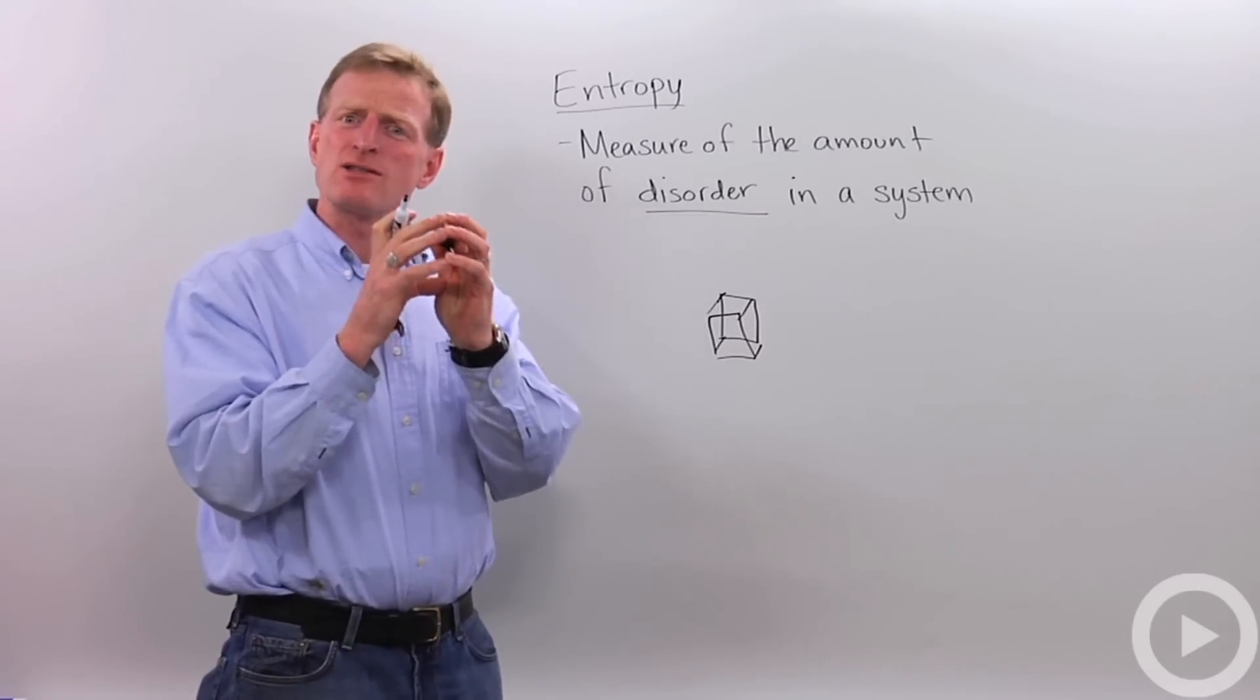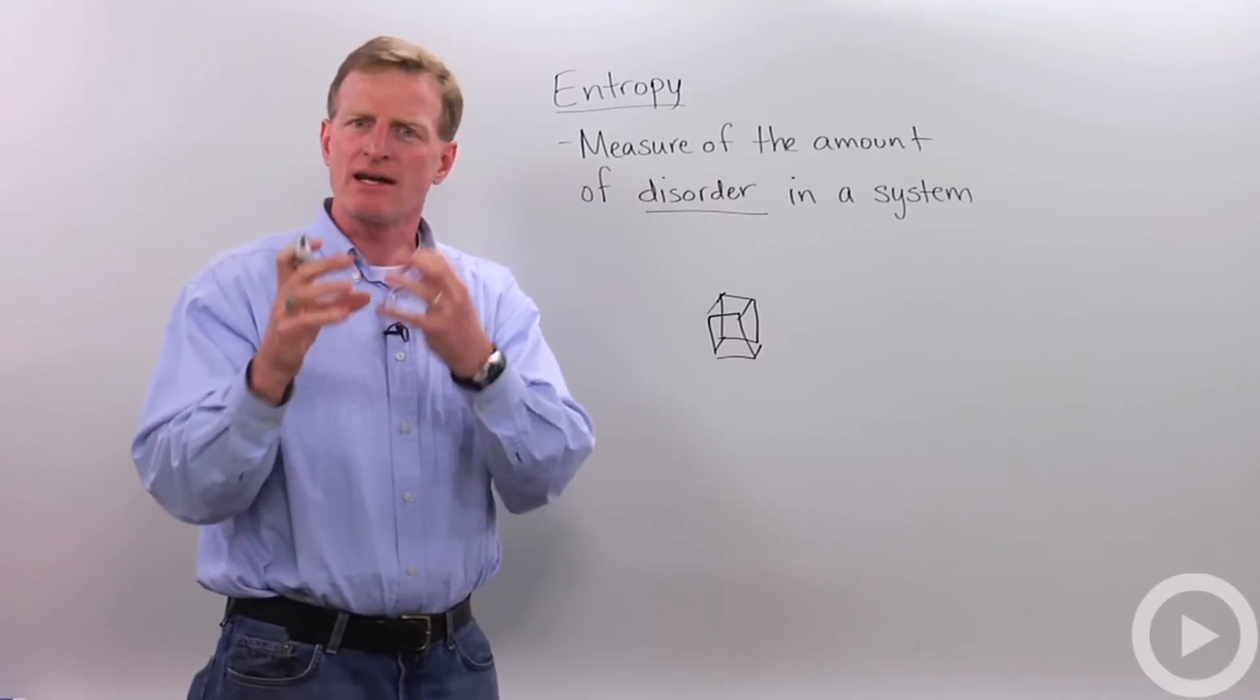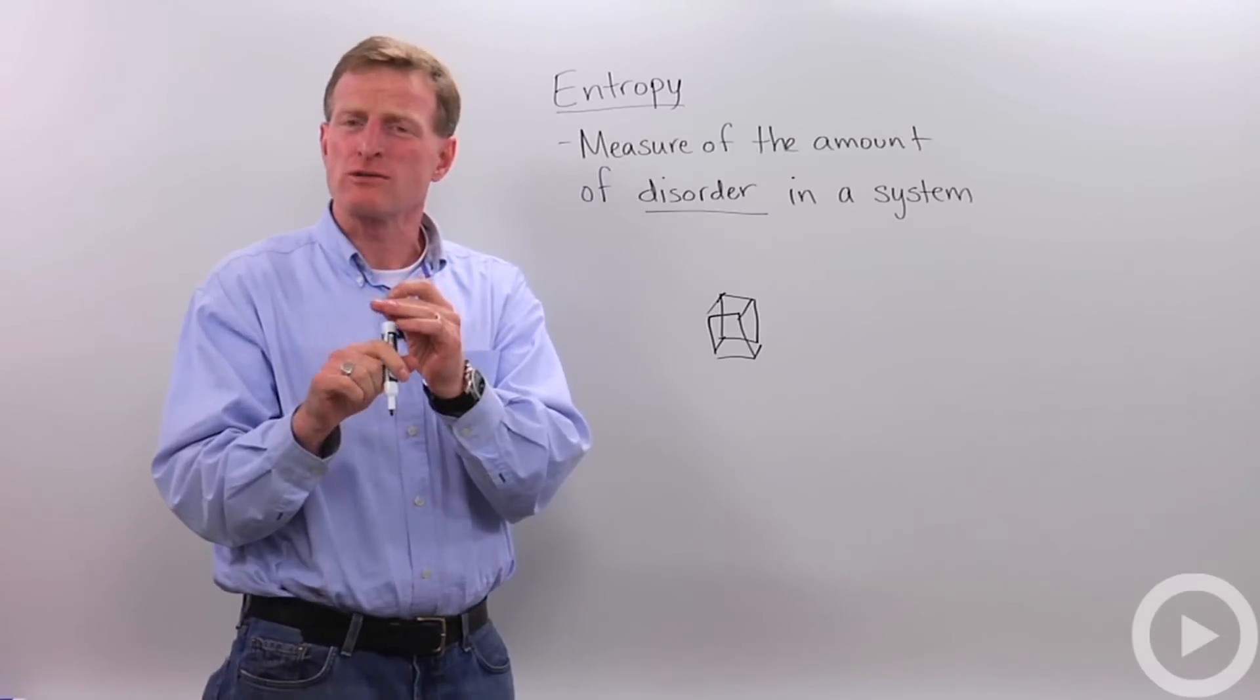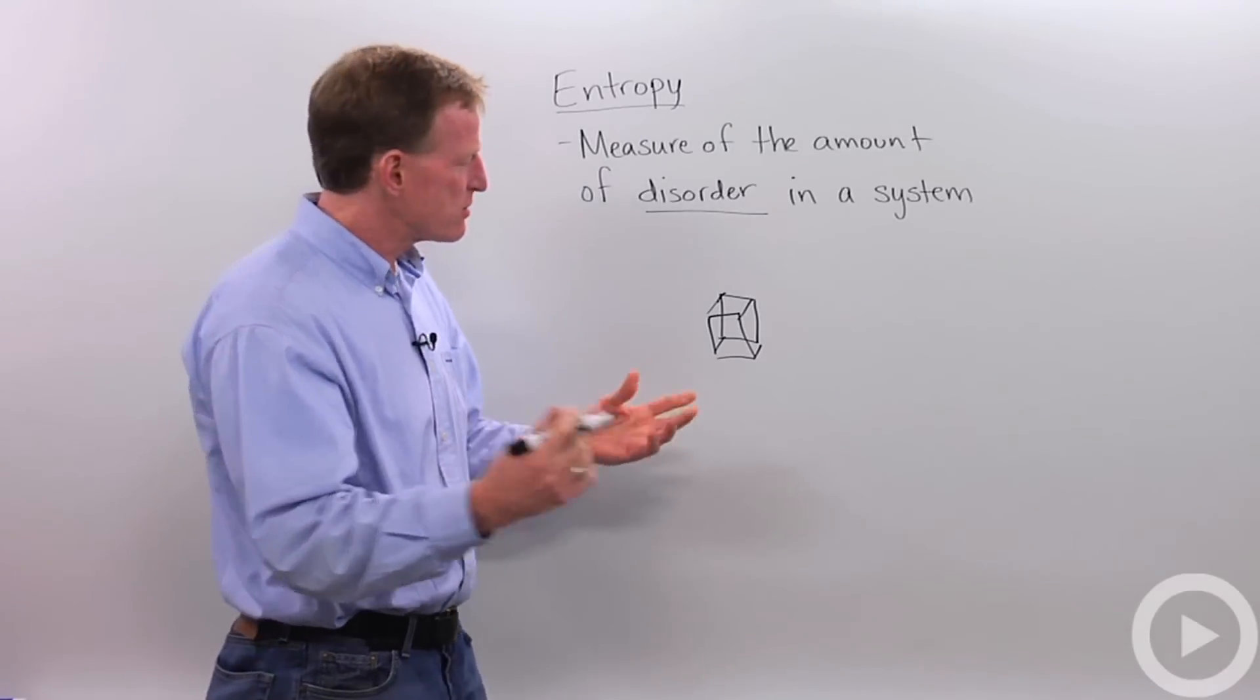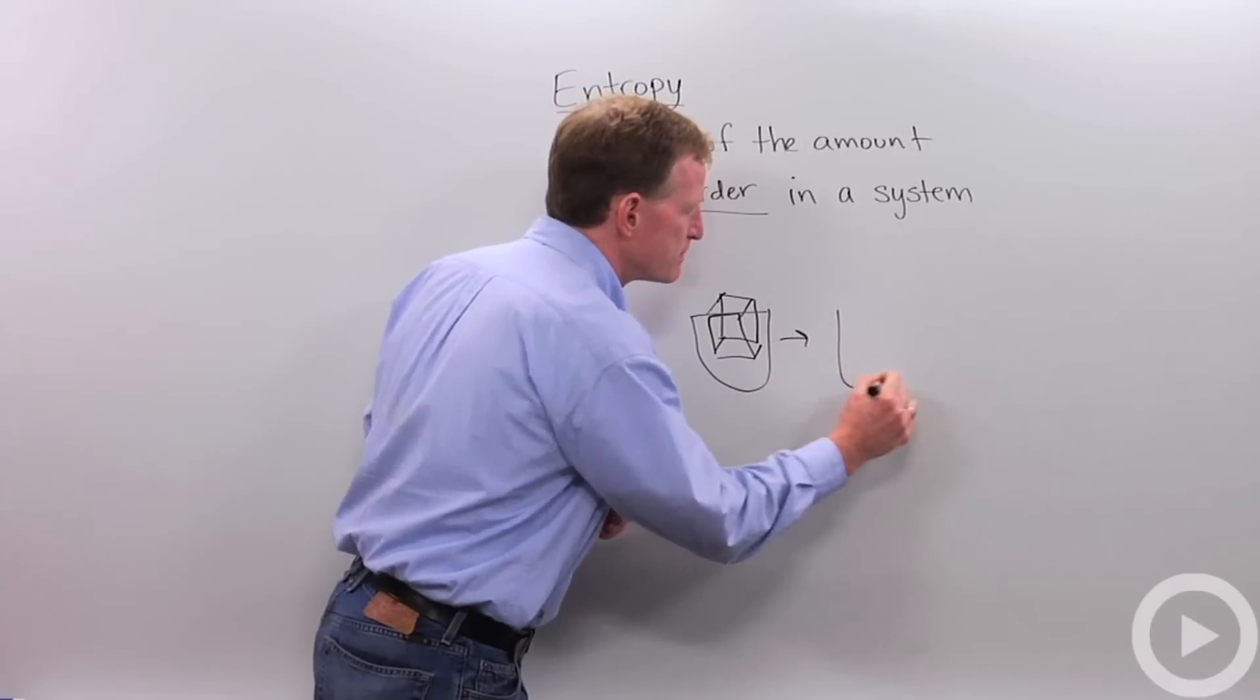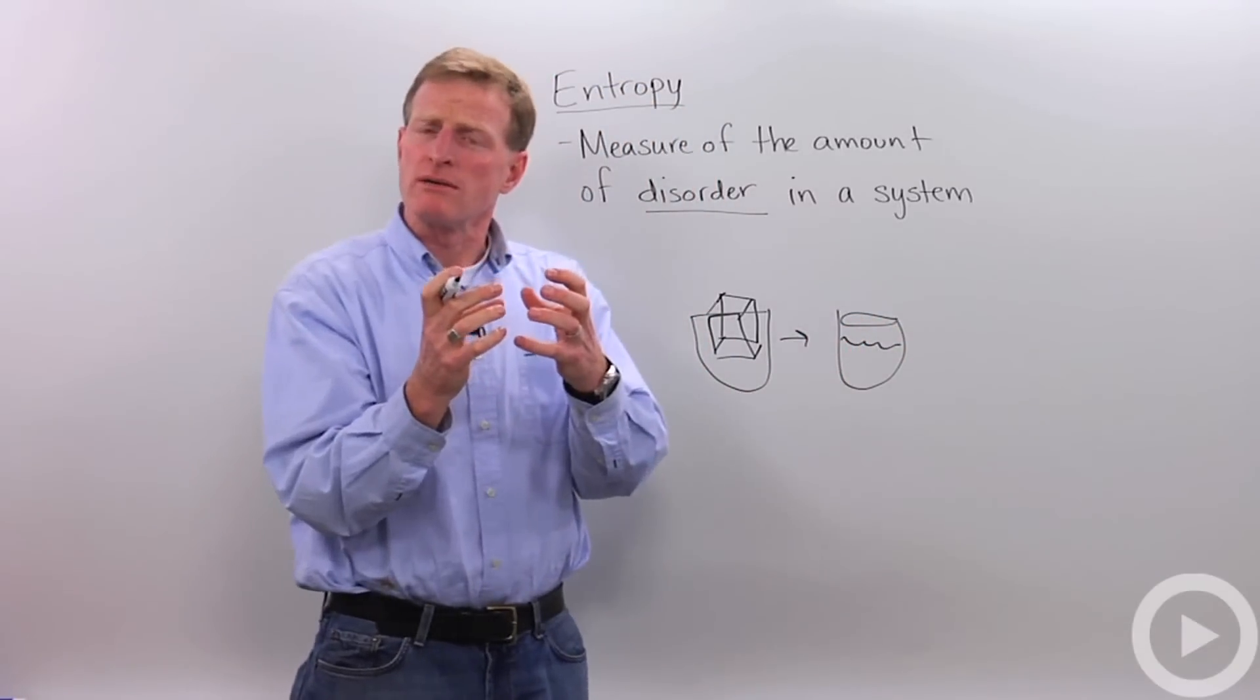Now if we let that ice cube melt, it's going to gain entropy. It's starting to gain energy, and it's starting to move around, and it's losing that order and that structure. It's moving towards disorder. And so now our ice cube, I'm going to put it into a little cup, is going to become water with more energy and more motion and more disorder.